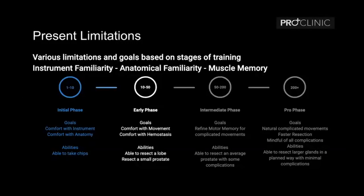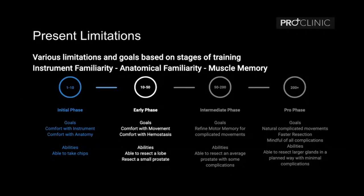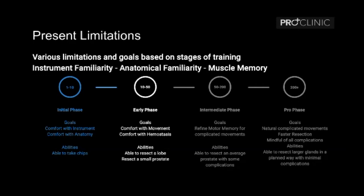We can divide learning into a few phases. In the initial phase, the resident becomes comfortable with the instrument, anatomy, and able to take a basic chip. In the early phase (roughly 10 to 50 cases), he becomes comfortable with movement and hemostasis, and can dissect a complete lobe or a small prostate in its entirety. In the intermediate phase (over 50 cases), motor memory refines for complicated maneuvers and he can resect an average prostate. In the pro phase (a few hundred cases), there is natural handling with faster resection, mindfulness of all complications, and ability to resect larger glands with minimal complications in a planned way.